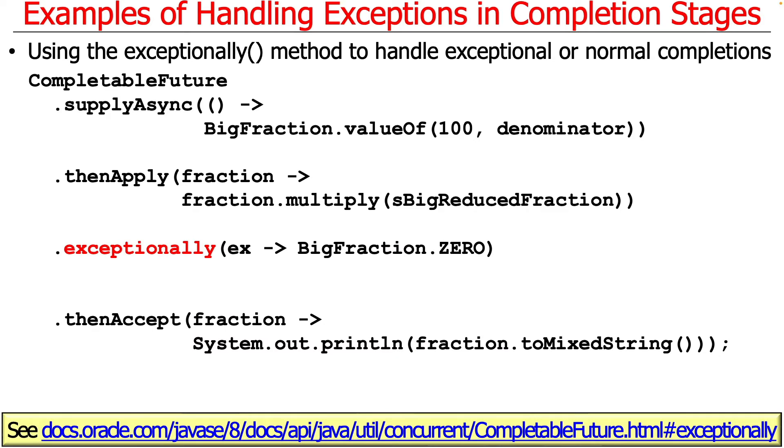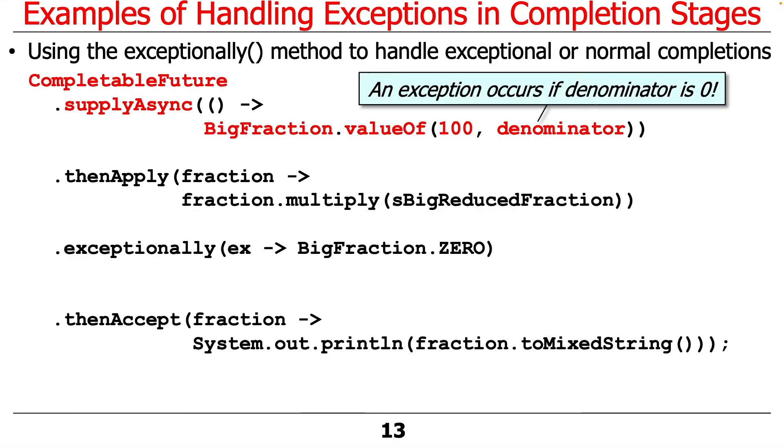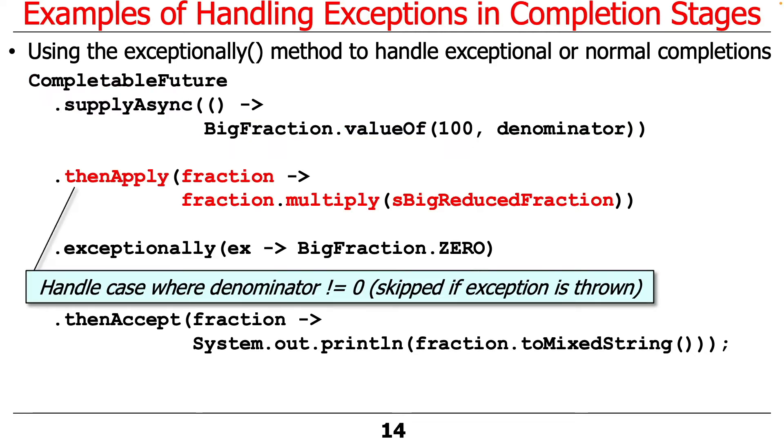Let's look at exceptionally next. Exceptionally is a little bit more concise, but it's also a bit more limited. In this case, we're going to have our supplyAsync method do the same thing it did before. It either will return us a big fraction with 100 as a numerator and some denominator that's non-zero, or the arithmetic exception will be thrown if denominator is zero. If all goes well and there's no exception, then the thenApply method will multiply the big fraction by the reduced big fraction.